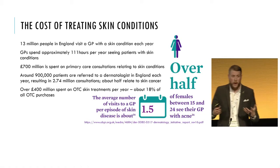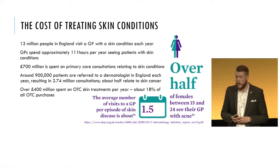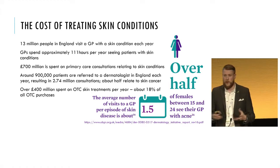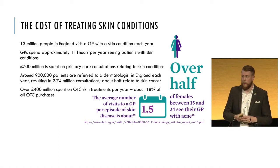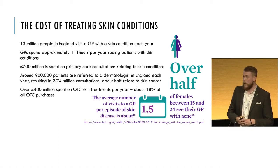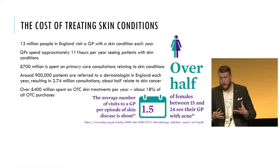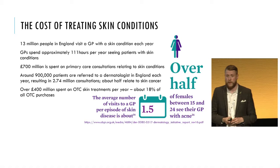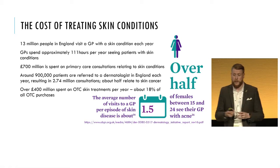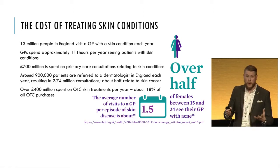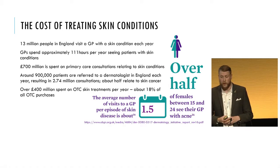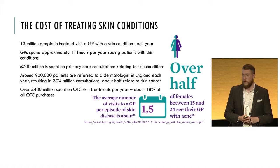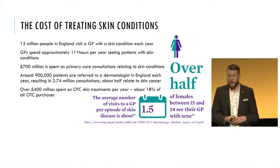So how does this equate to a particular part of the NHS? About 30 million people see their GP each year with a skin condition, which equates to about 111 hours of GP time per GP per year spent simply on seeing people with a skin condition, and this equates to about £700 million spent on primary care consultations alone. Of those, around 900,000 will be referred on to a dermatologist, equating to about 2.74 million consultations per year in the UK.